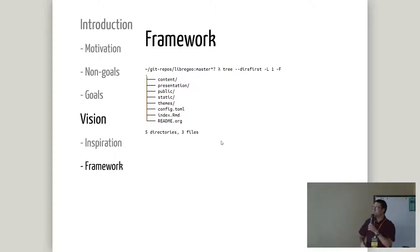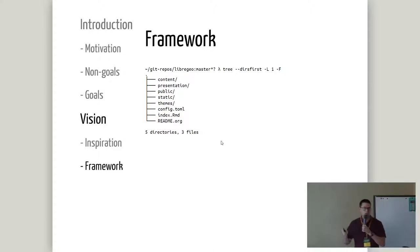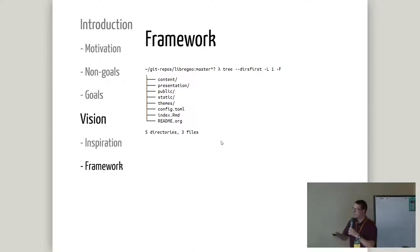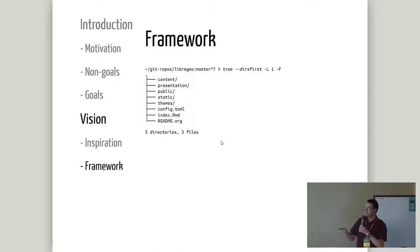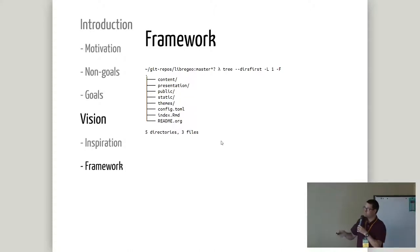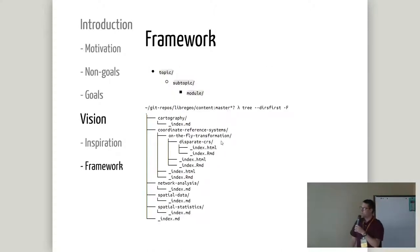Within the site, this is just a file tree from the site after it's been cloned onto a machine. There are just a couple of directories that are important: the content directory and then the public directory. R Markdown files and Markdown files are generated inside of content, and then when GitLab Pages renders the website, it creates HTML files which are moved into public.